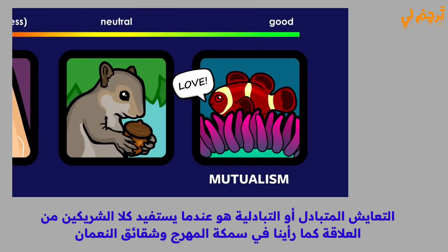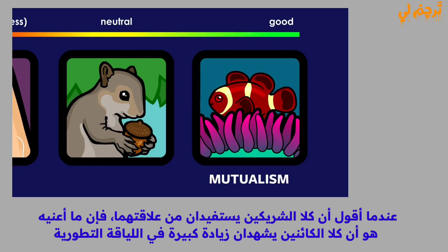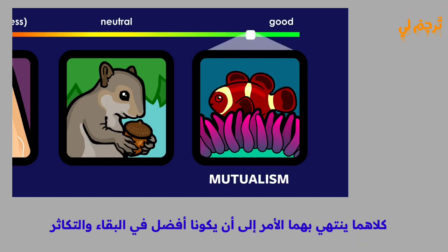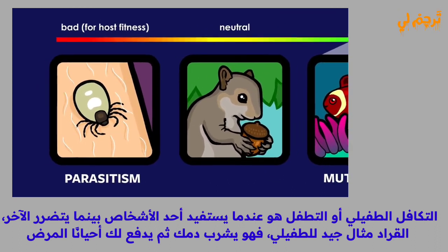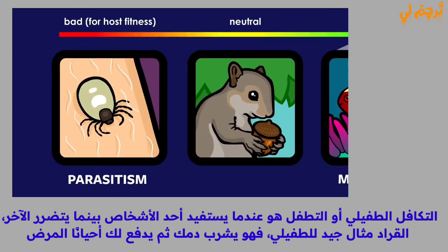When I say that both partners benefit from their relationship, what I mean is that both organisms experience a significant increase in evolutionary fitness — they both end up being better at surviving and reproducing. Parasitic symbiosis, or parasitism, is when one benefits while the other is harmed. Ticks are a good example of a parasite.